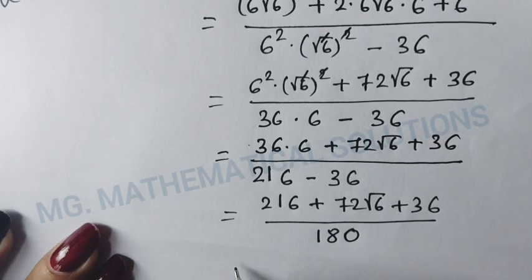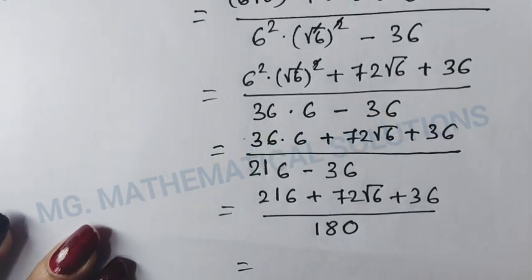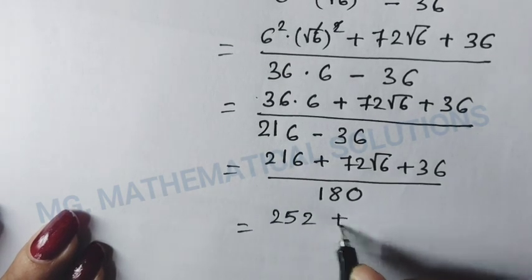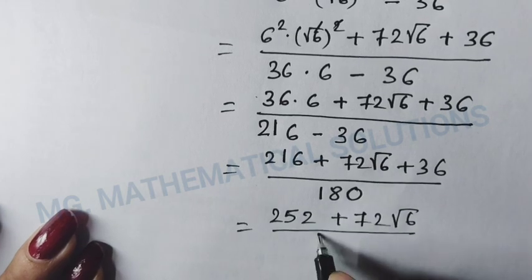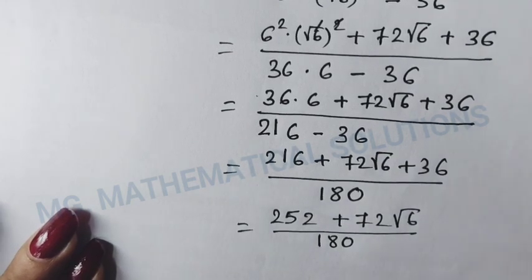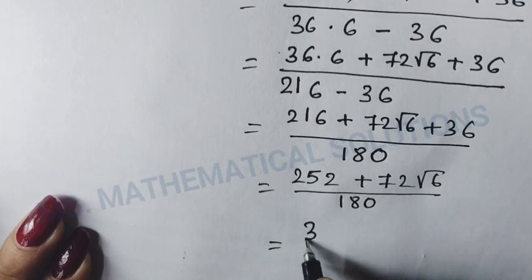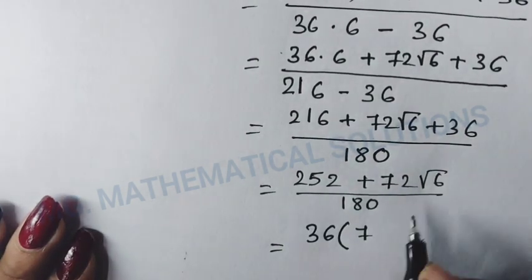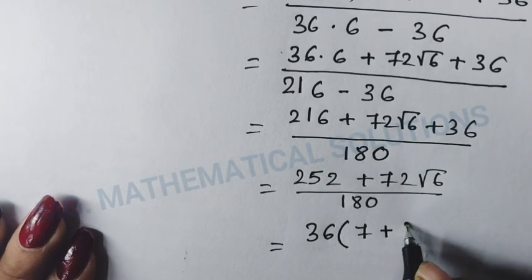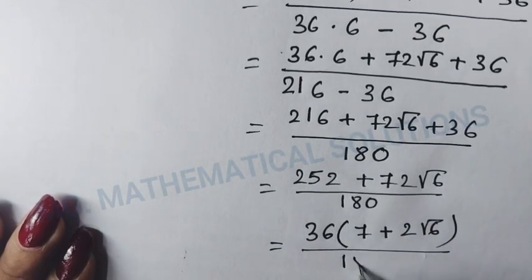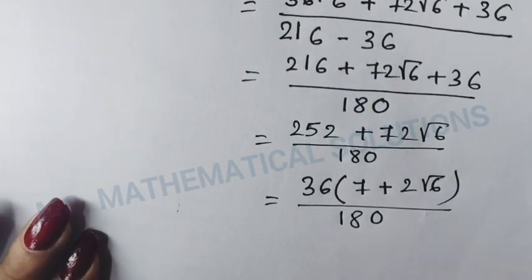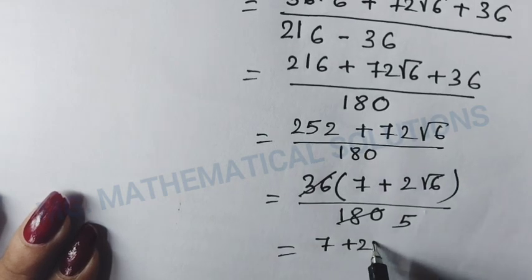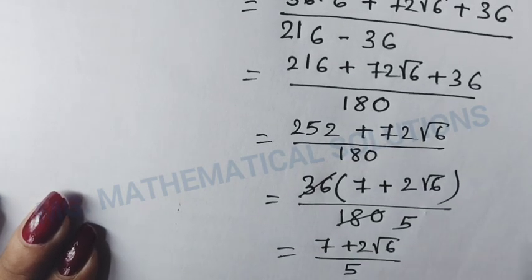Now we take common factor 36 from the numerator: 36 × 7 = 252 and 36 × 2 = 72, so the numerator becomes 36(7 + 2√6). The denominator is 180 = 36 × 5. Dividing gives (7 + 2√6) / 5.